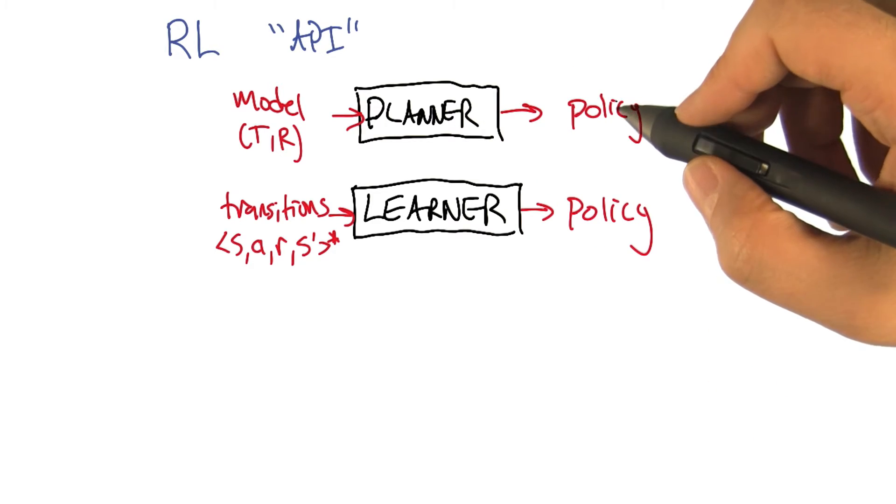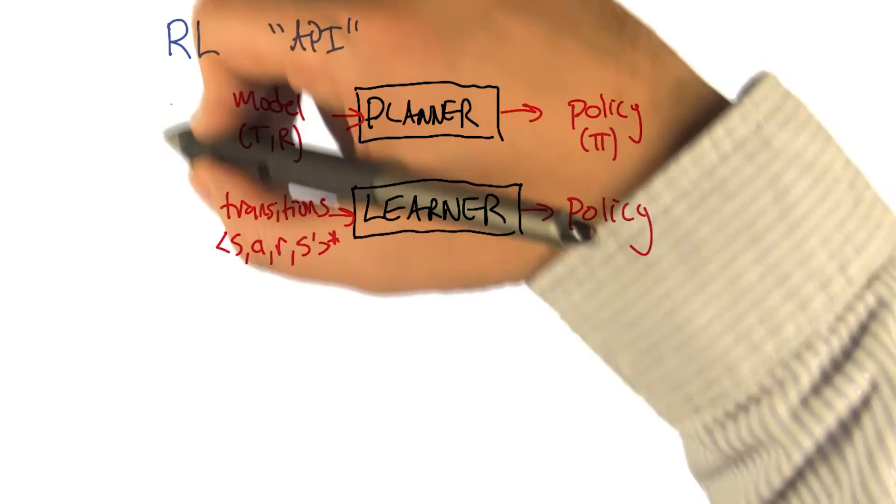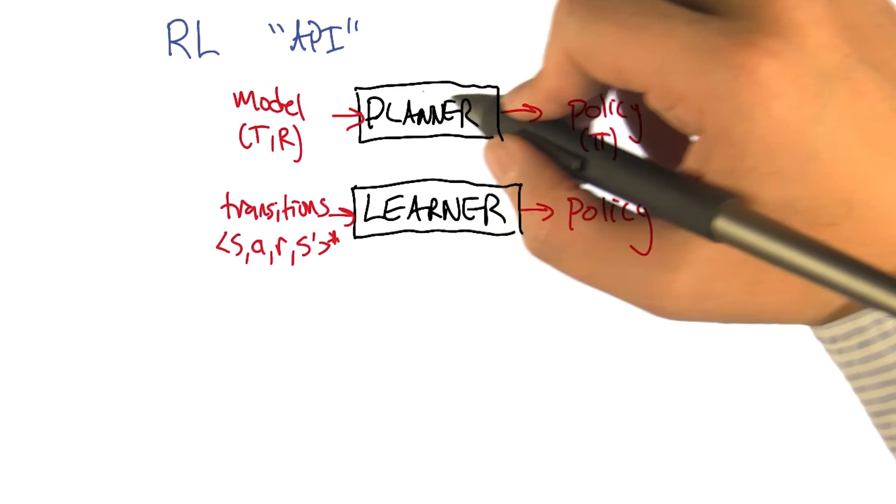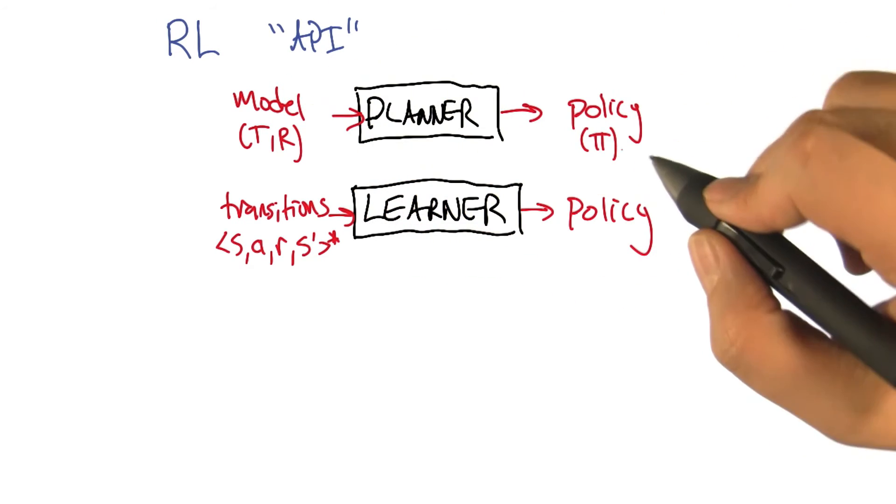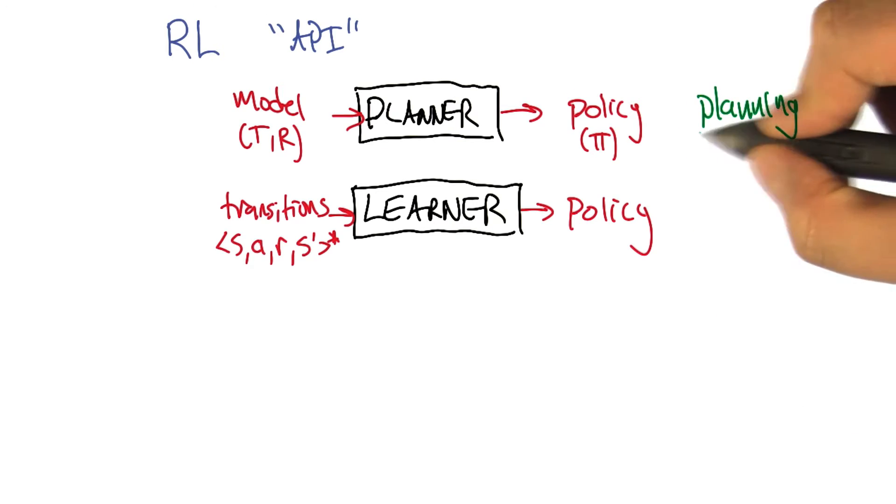Right, and a policy is like pi, it maps states to actions. And that whole activity, what would you call that? What would you call the problem of, or the approach of taking models and turning them into policies? Maybe I'd call them planning. Yeah, that's what I was hoping you would say.